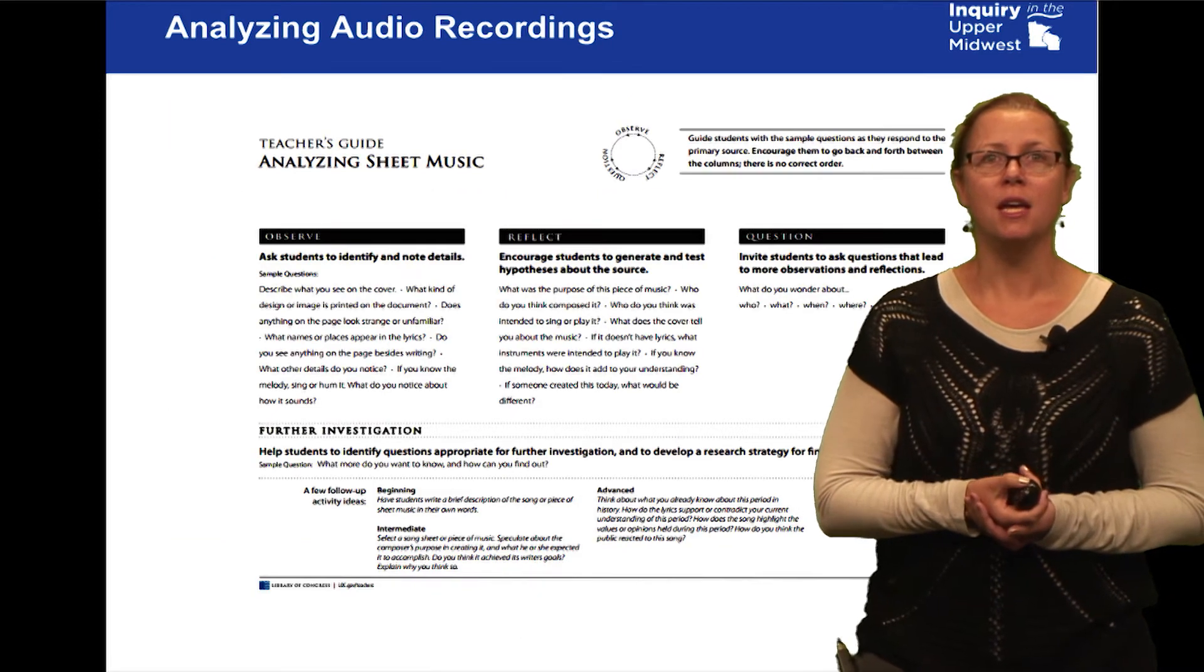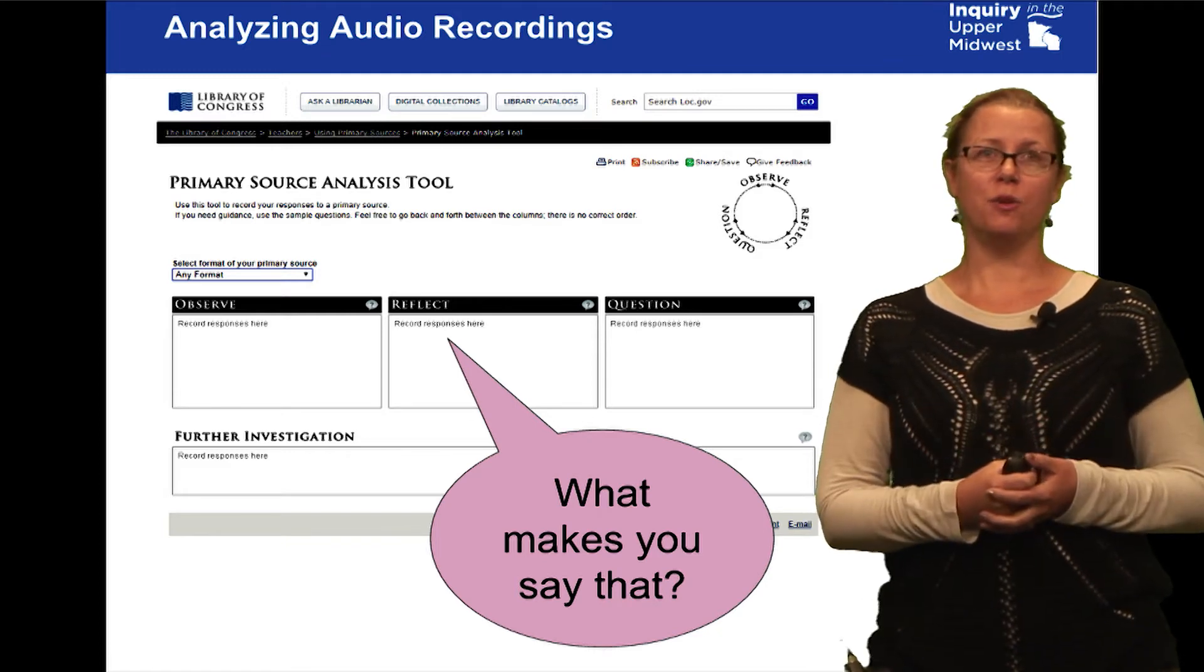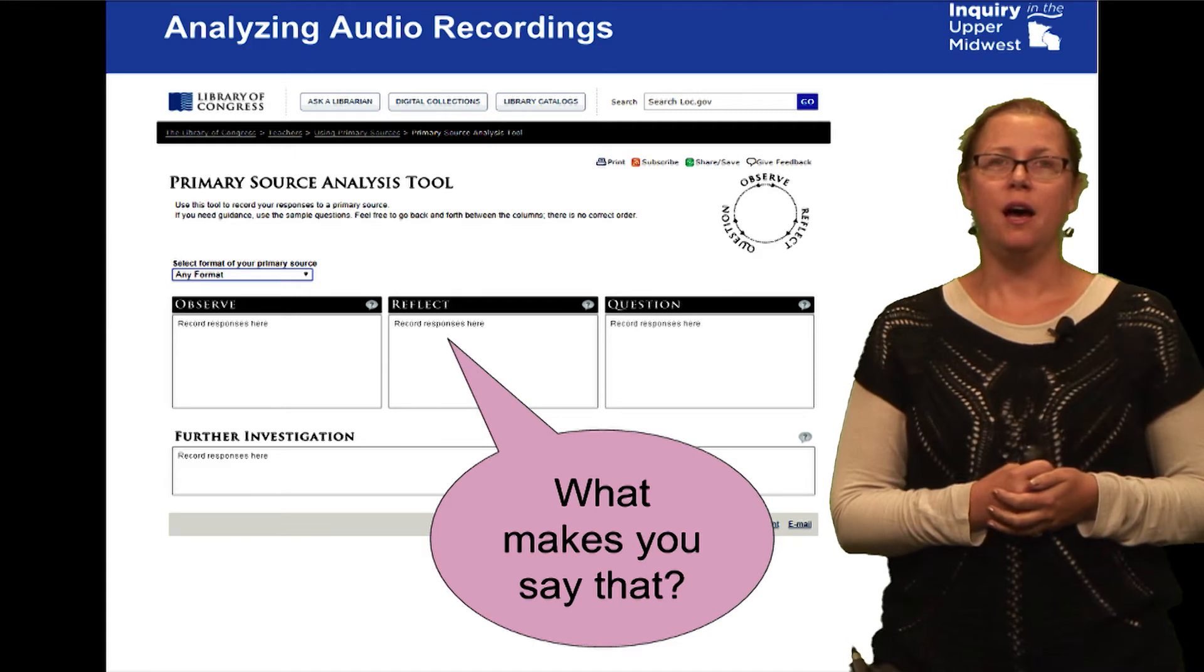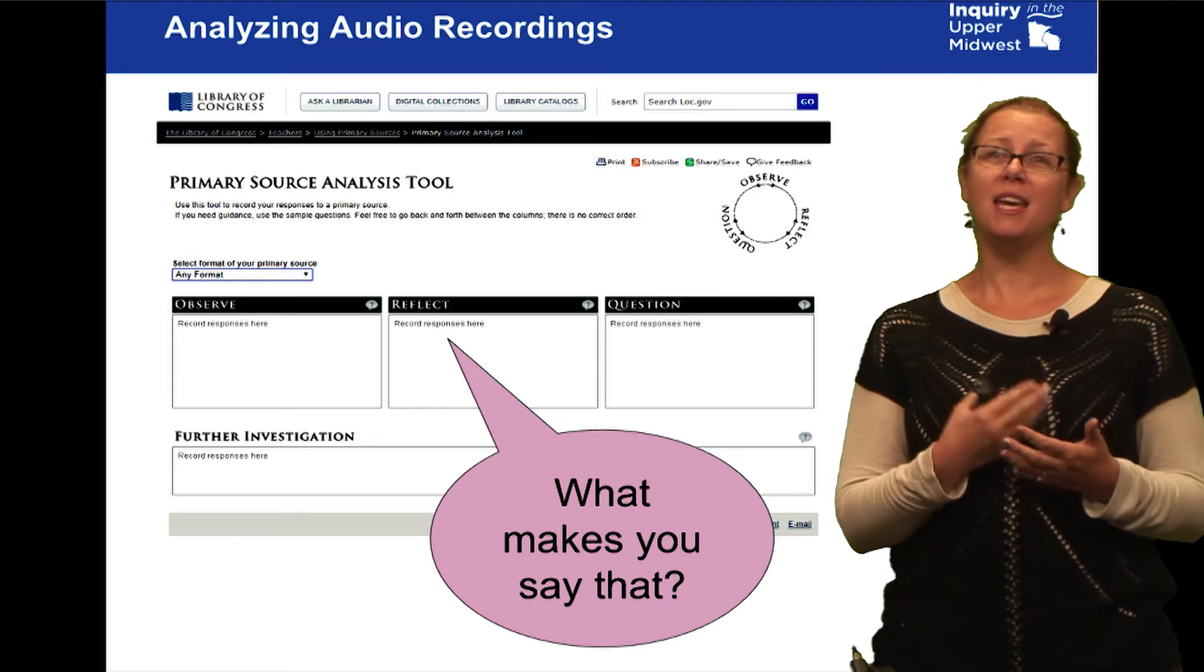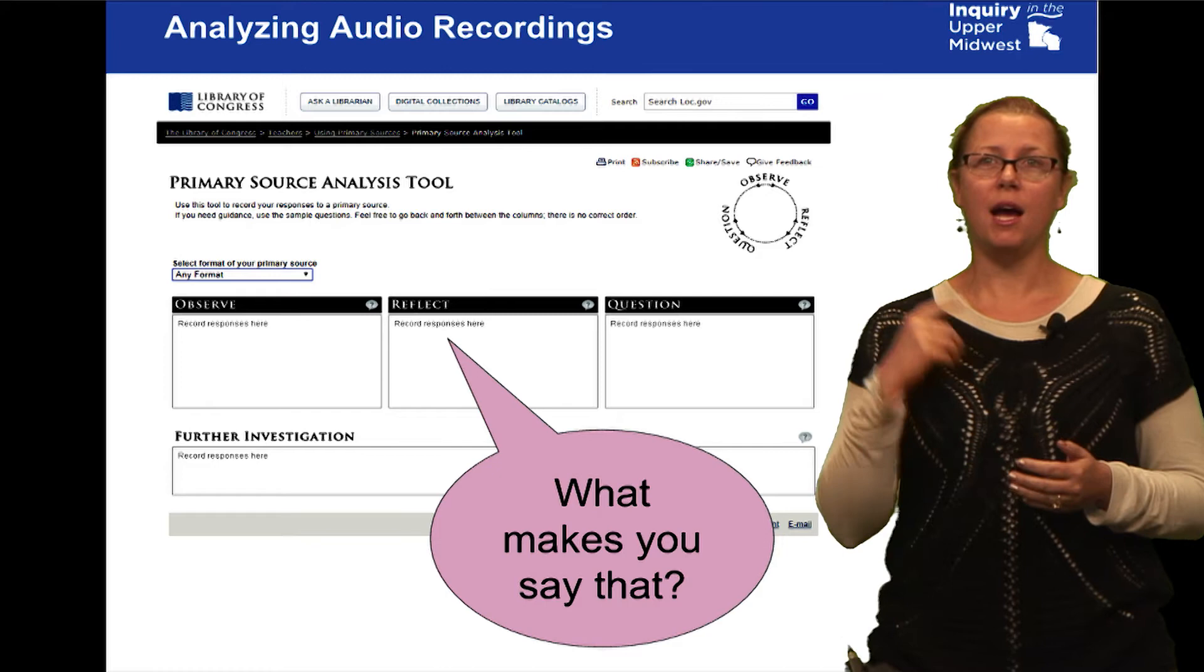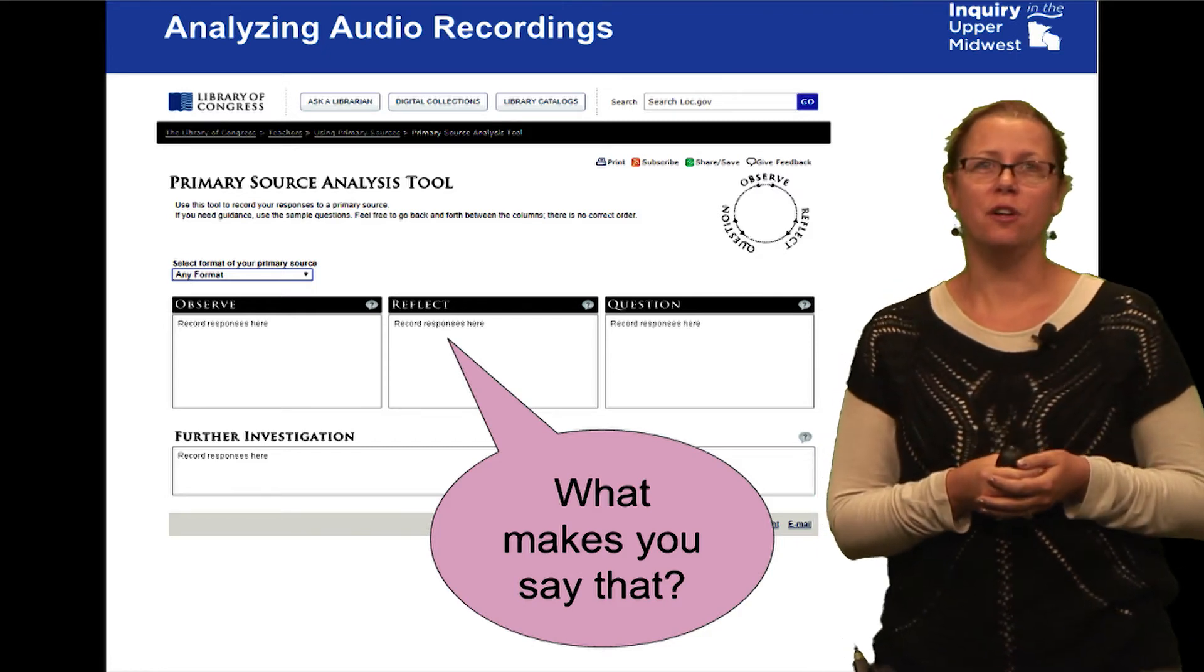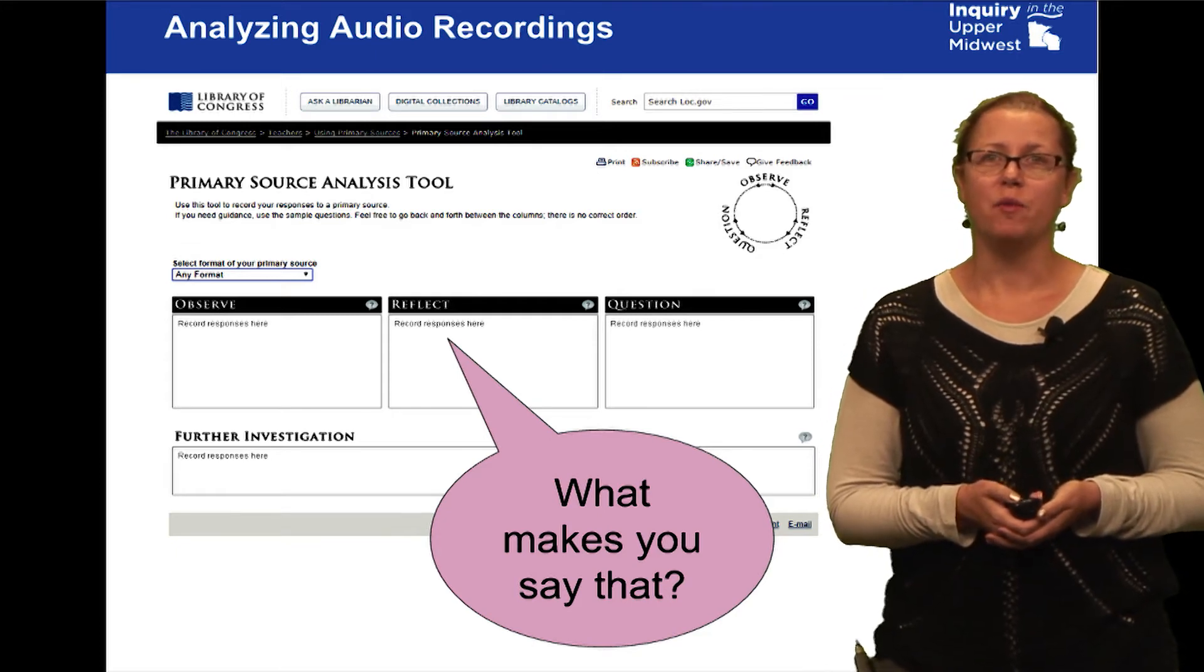Whenever we're doing this kind of analysis of primary sources, first we do our observations—anything we can put our finger on in that primary source. Then we do our reflections, which are really about inferences. What do I think I know about this source already? As I'm making those inferences, I want to constantly be asking myself or my students, 'What makes you say that?' Finally, what are the questions that you have about this primary source?